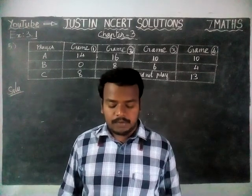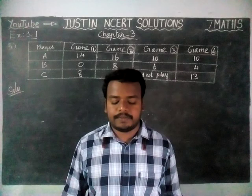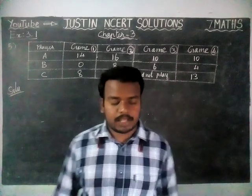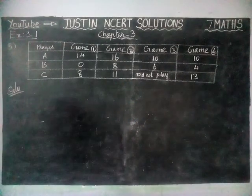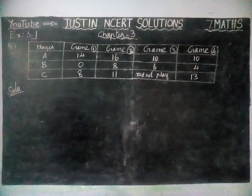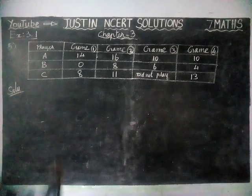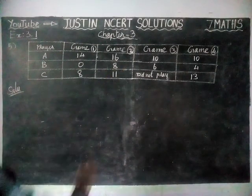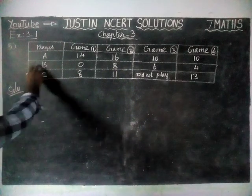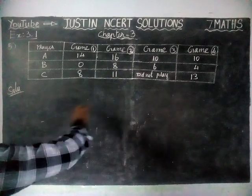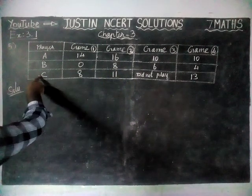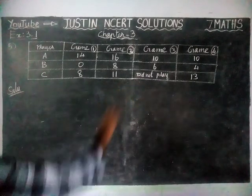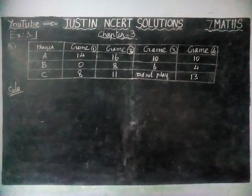The question is: the following table shows the points of each player scored in 4 games. For player A in game 1, game 2, game 3, and game 4: 14, 16, 10, and 10. For player B: 0, 8, 6, and 4. And player C: 8, 11, did not play the 3rd match, and 4th match: 13.